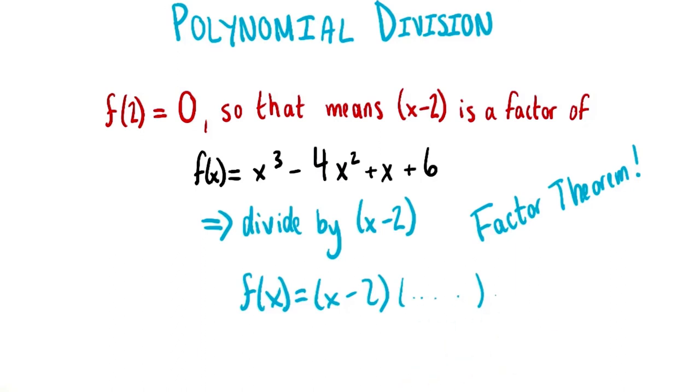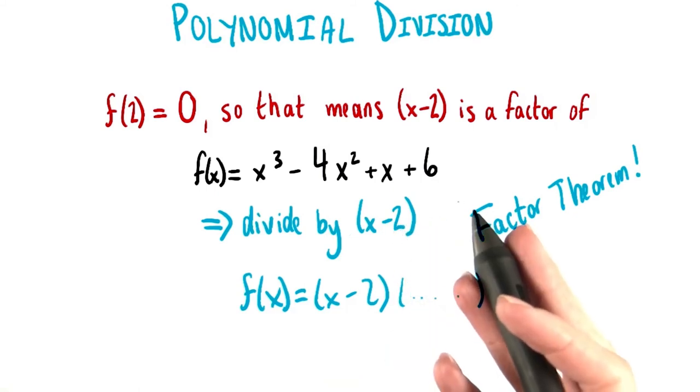But what is that other stuff? Well, to find it, we're going to need to divide this expression by x minus 2. In particular, we're going to use long division. That's what we'll look at next.